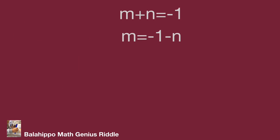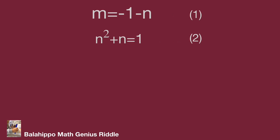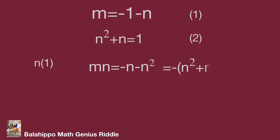So m equals minus 1 minus n — call this equation 1. Substituting m by (minus 1 minus n) into n squared equal to m plus 2, we get n squared equal to minus 1 minus n plus 2. Simplifying, we get n squared plus n equal to 1 — call this equation 2. Multiplying n on both sides of equation 1 gives mn equal to minus n minus n squared, which equals minus(n squared plus n). Substituting n squared plus n by 1, we get mn equal to minus 1.